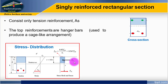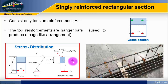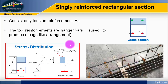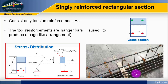Practically, for a singly reinforced section, consider a simply supported beam. At the bottom part, you can see one, two, three, four bars — that is the area of steel, As, located at the tension zone.